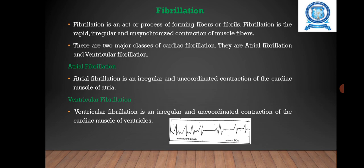There are two major classes of cardiac fibrillation. The first one is atrial fibrillation, which is an irregular and uncoordinated contraction of the cardiac muscle of the atria. During atrial fibrillation, the ventricles can function normally, but the atria are in a fibrillation condition. Due to atrial fibrillation, most of the blood flows into the ventricles before the atrial contraction.